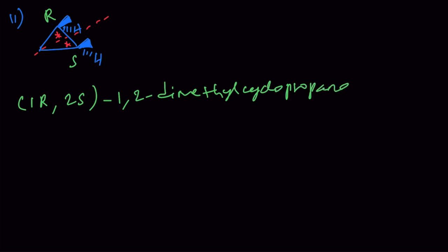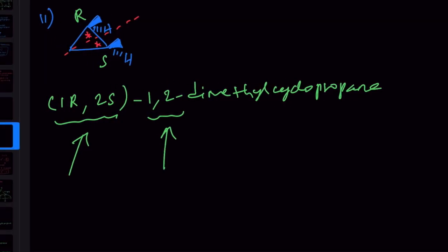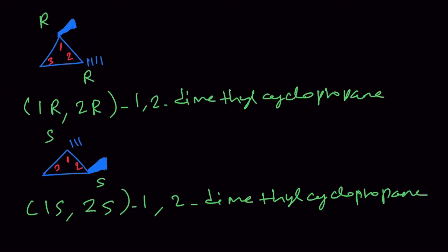The IUPAC name is (1R,2S)-1,2-dimethylcyclopropane. Note that 1R and 2S specify the stereochemistry, while the subsequent 1,2 specifies the positions of the methyl groups — we must mention 1,2 twice. Do not write it as (1R,2S)-dimethylcyclopropane; you must specify the stereochemistry at both positions and then again state 1,2. For the enantiomers, assign priorities as per CIP rules yourself and verify — the final IUPAC names for the enantiomers can be determined accordingly.